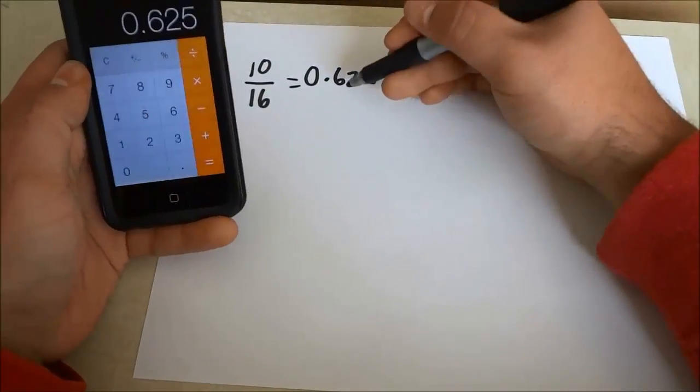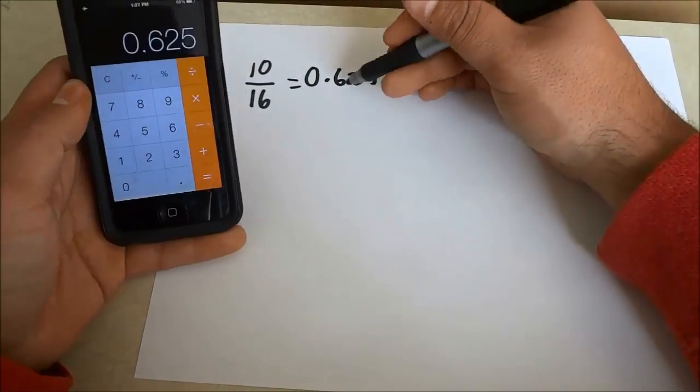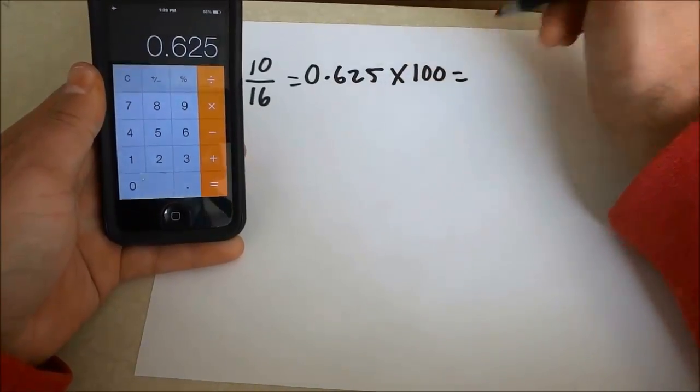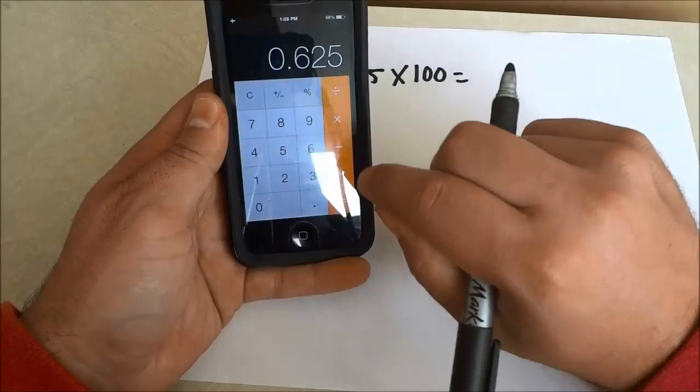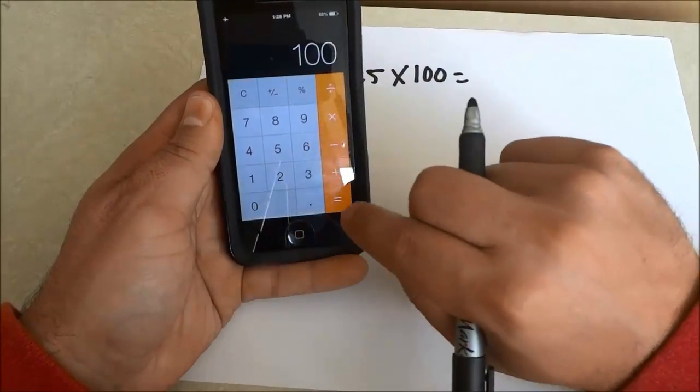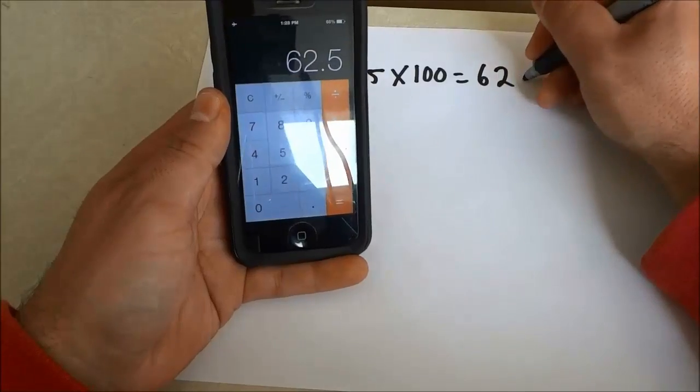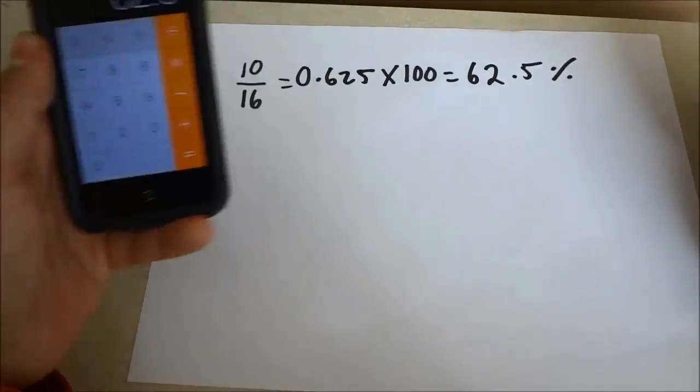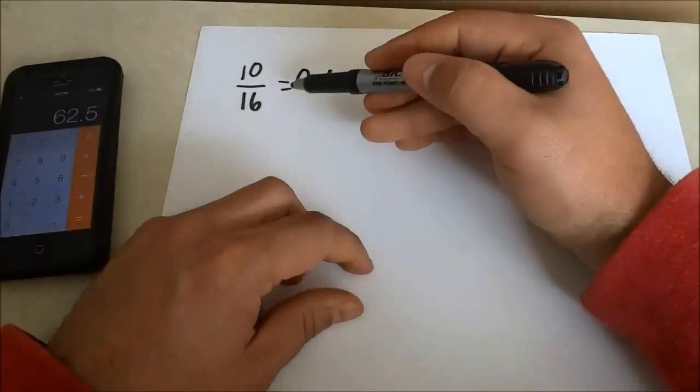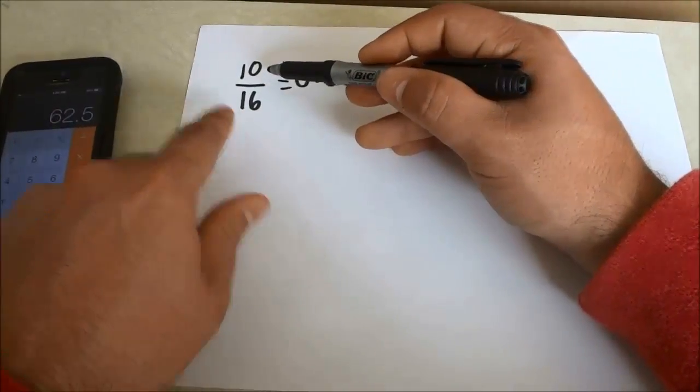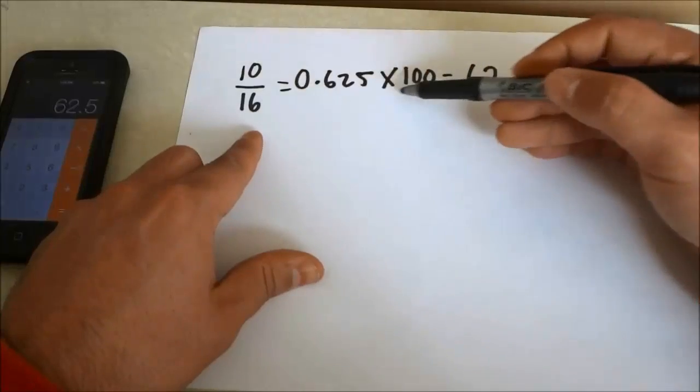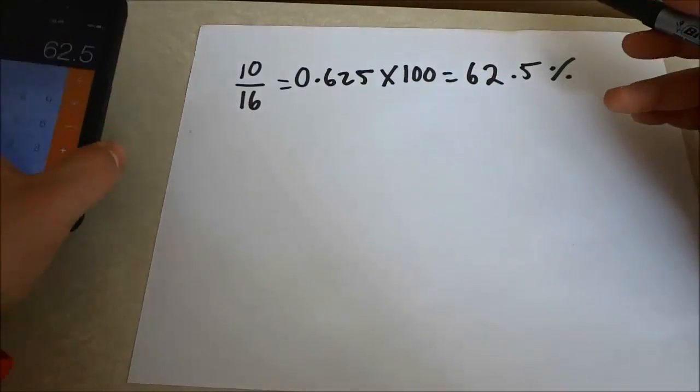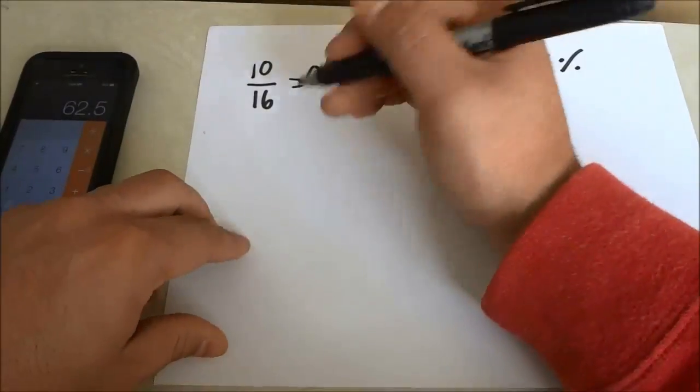The next step is to take this number, so the number that you just got, and multiply it by 100. So I'm going to take that number and multiply it by 100, just like that. And it gives me 62.5 and that is the percentage, so 62.5%. So if you received a test score of 10 out of 16, when you do the conversion, it is equal to 62.5%.